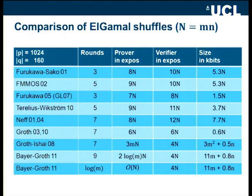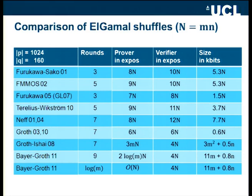Comparing to prior work, our verifier takes 4n exponentiations, which is as low as one can get using El-Gamal encryption without special tricks. Our prover takes 2·log(m)·n exponentiations with constant rounds, which is not optimal — ideally linear — but if m is not too large, we remain in the same range as prior work. Even if m is slightly larger, the very fast verifier keeps the total shuffle argument time comparable. We can also reduce prover cost to linear by allowing more interaction. Our communication cost is the lowest achieved so far.